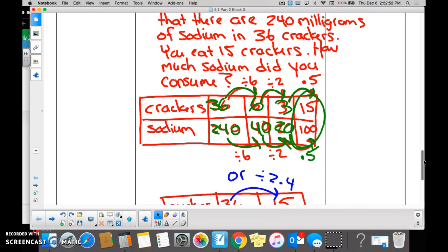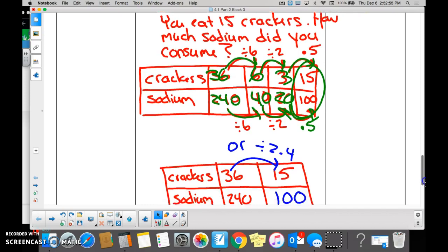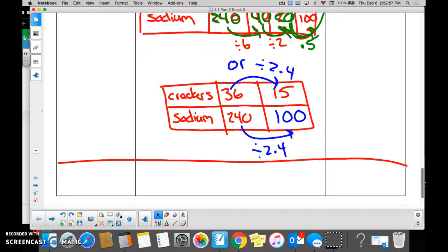Second way of doing it. Layla, Sophia, they simply started with the same table, 36 crackers, 240 milligrams of sodium. Then they wrote, I need to get to 15 crackers. So instead of going through all of the friendly numbers, remember the friendly numbers? They simply took 36 and divided by 15 to figure out how they got there.